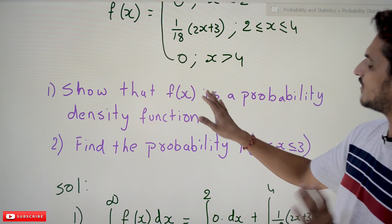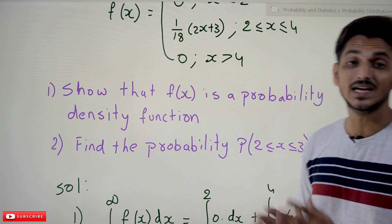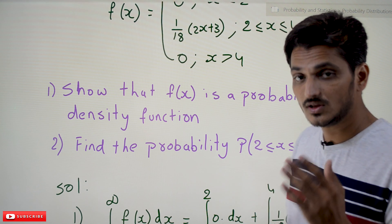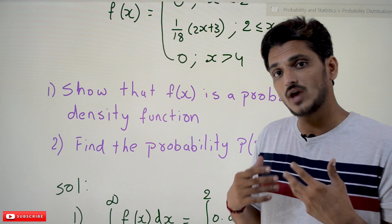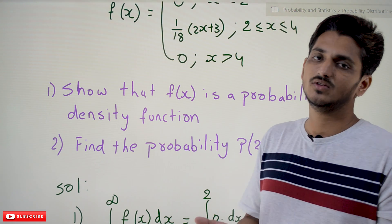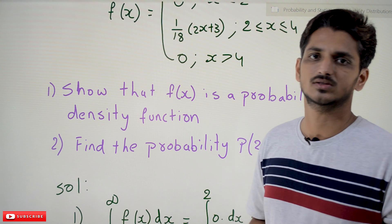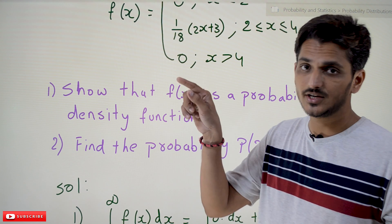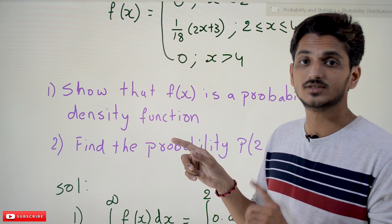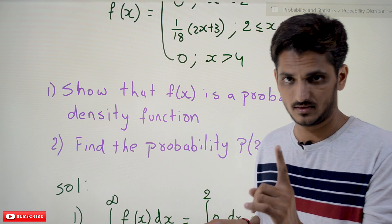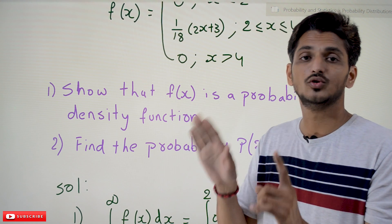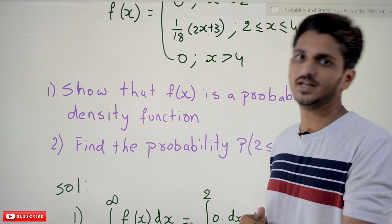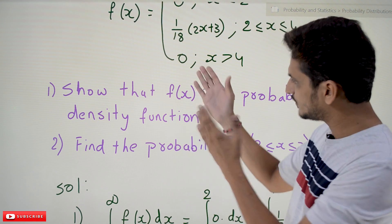What they are going to ask is: show that f(x) is a probability density function. As we discussed in our last class, if you want to accept a function as a probability density function it should satisfy the condition that the integral from minus infinity to infinity of f(x) dx should equal 1 — the area under the curve should be 1.